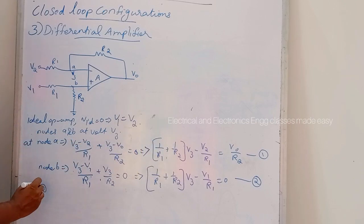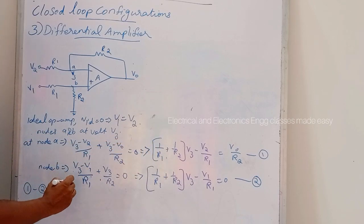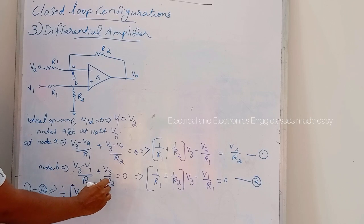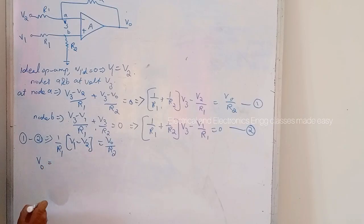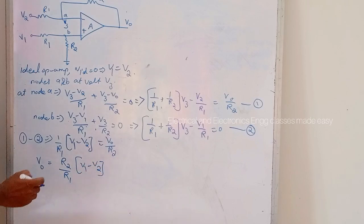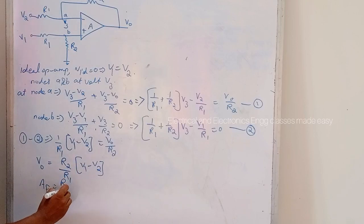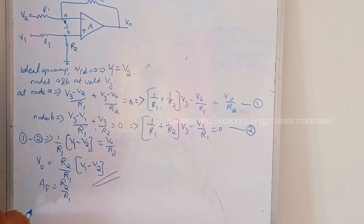Subtracting equation 2 from equation 1, the V3 terms cancel. We get 1/R1 into V1 minus V2 equals V0 divided by R2. Therefore, V0 equals R2 divided by R1 into V1 minus V2. The gain AF equals R2 divided by R1. This is the output voltage for the differential amplifier.